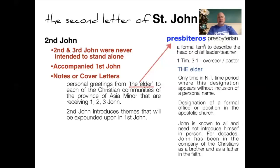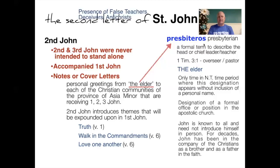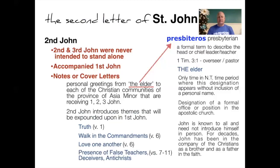Second John introduces themes expounded upon in First John. In this very short letter, John talks about truth, walking the commandments, and loving one another — all themes from First John. Imagine the scroll being opened, and here is this letter we call Second John — essentially a cover letter giving a summary of what the longer letter covers: truth, walking the commandments, loving one another, and also the presence of false teachers, deceivers, and antichrist. It functions like a table of contents.